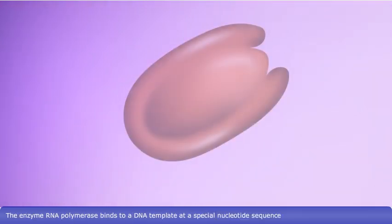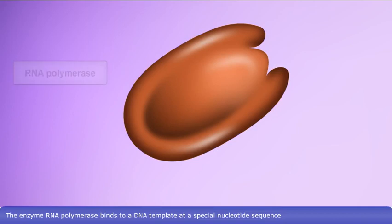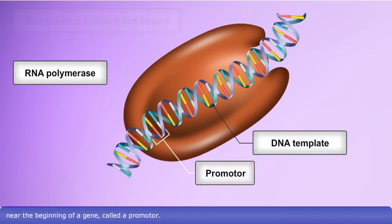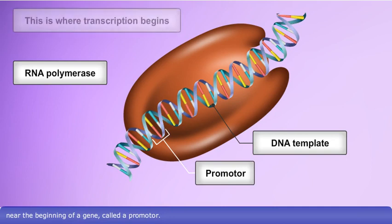The enzyme RNA polymerase binds to a DNA template at a special nucleotide sequence near the beginning of a gene, called a promoter. This is where transcription begins.